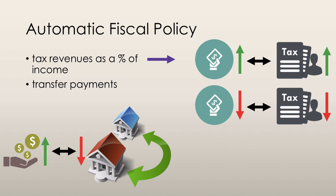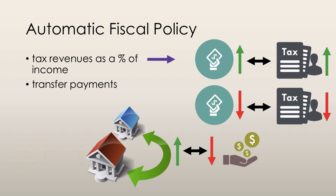The same concept applies with transfer payments. During an expansion, when people earn more, the government spends less on transfer payments. During a recession, when people earn less, the government spends more on transfer payments. Taxes and transfer payments are two automatic elements of fiscal policy.